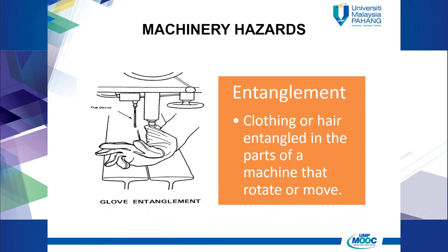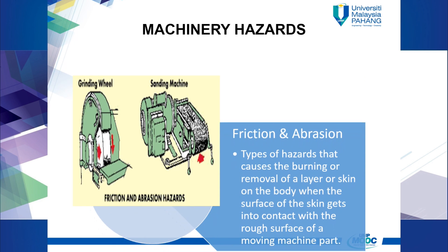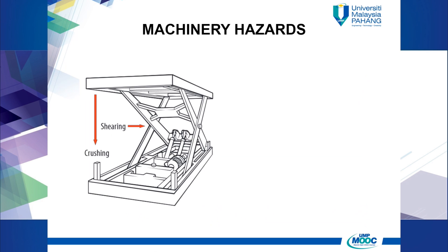Entanglement hazard happens when clothing or hair becomes entangled in the parts of a machine that rotate or move, like a roller machine, gear, or a wheel. Friction and abrasion hazards are types of hazard that cause the burning or removal of a layer of skin on the body when the skin gets into contact with the rough surface of a moving machine part.